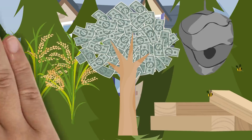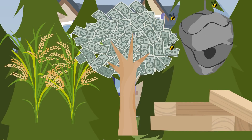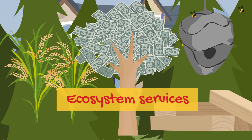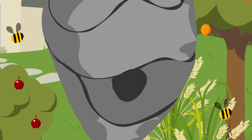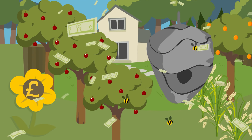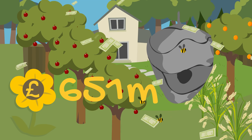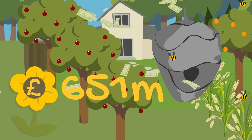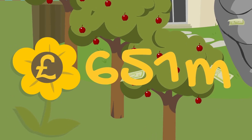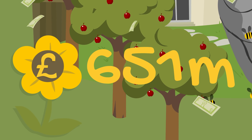We're only now just starting to put a value on these services, which are often called ecosystem services. For example, it is estimated that the pollination services provided by bees is worth £651 million to the UK economy each year — and the bees do this completely for free.